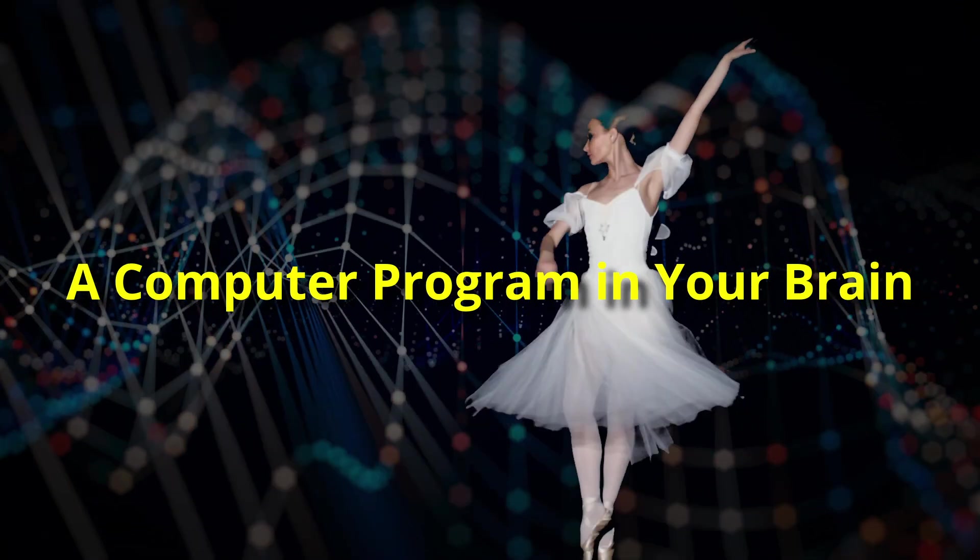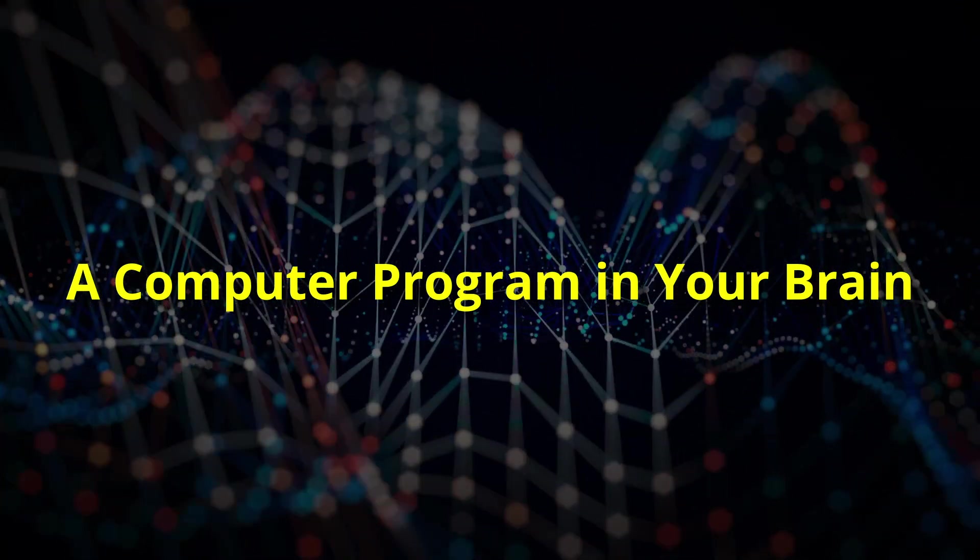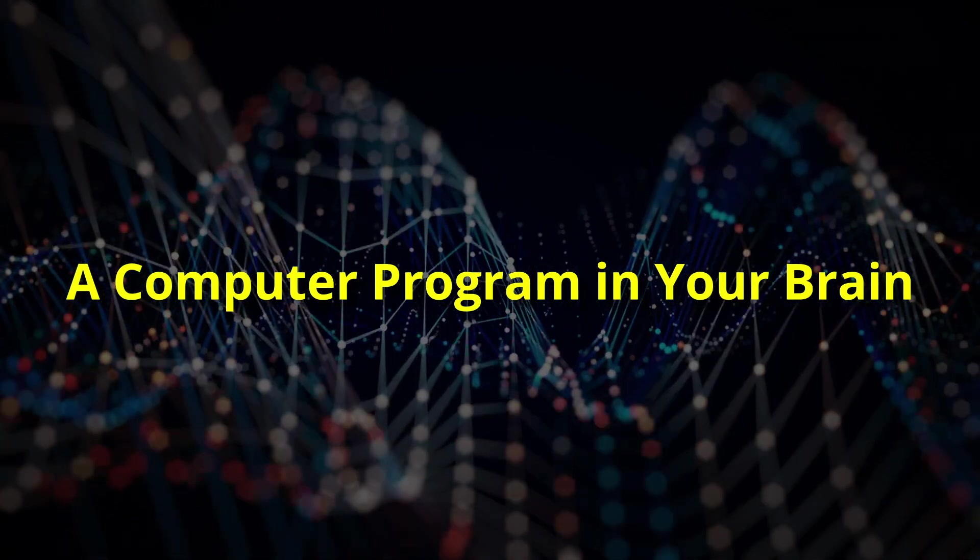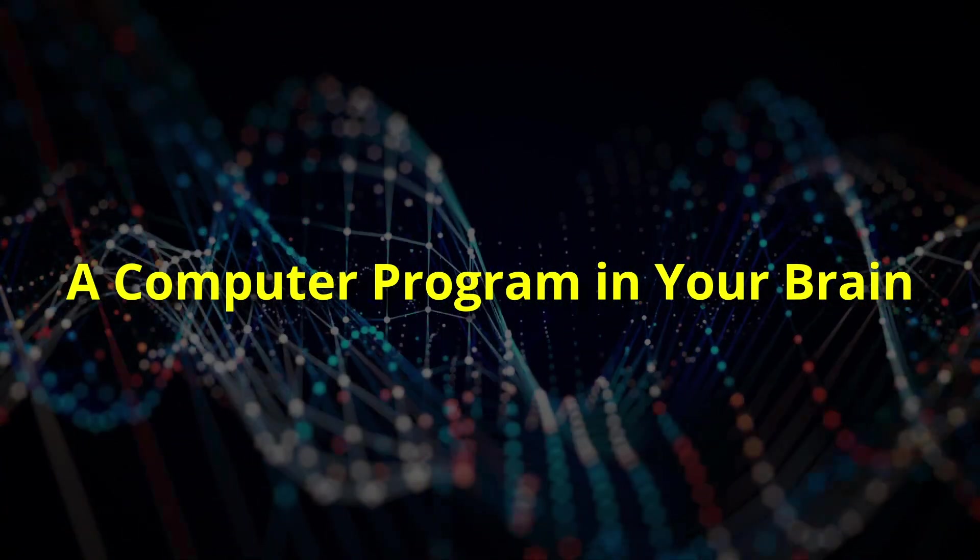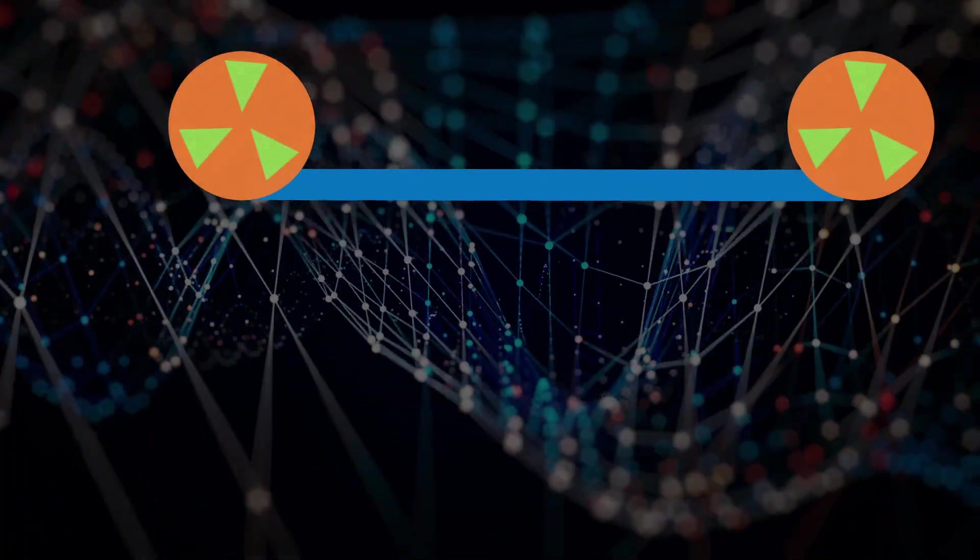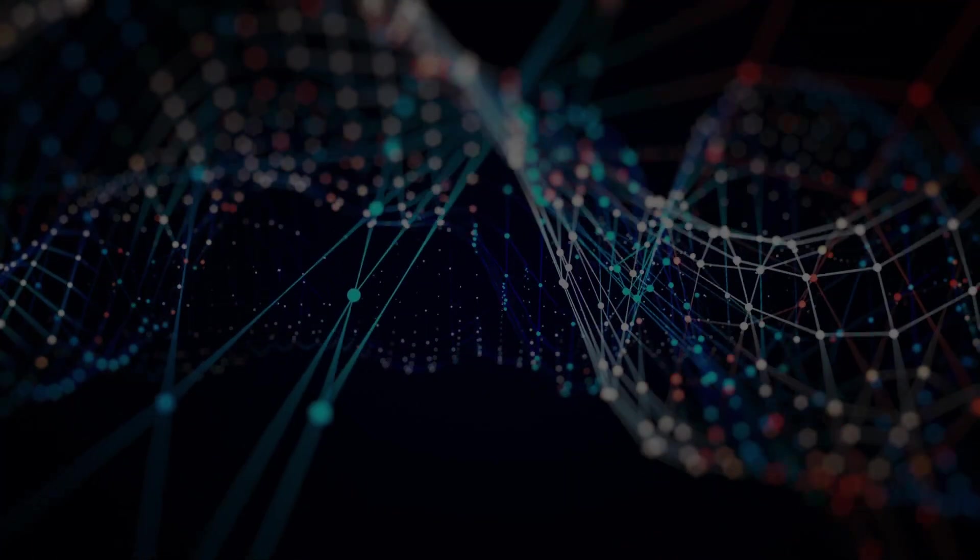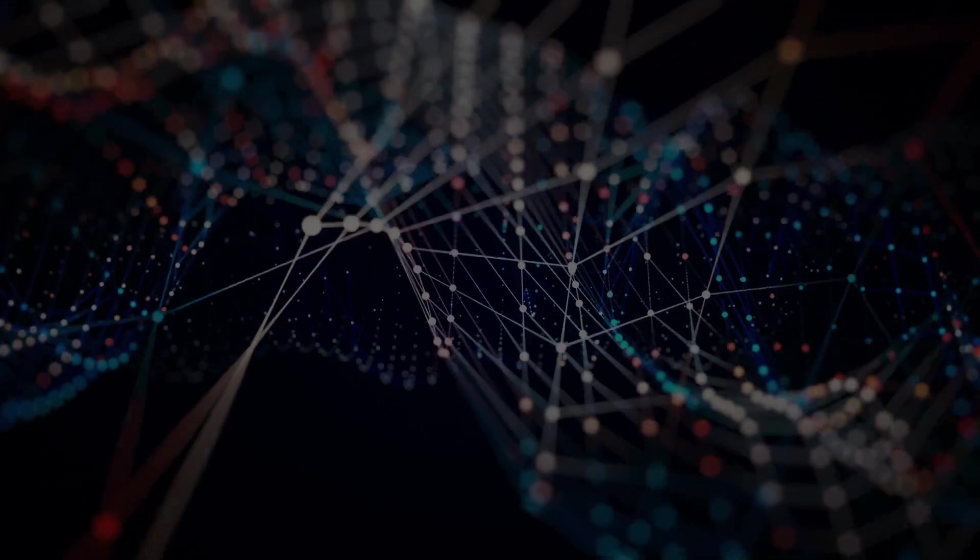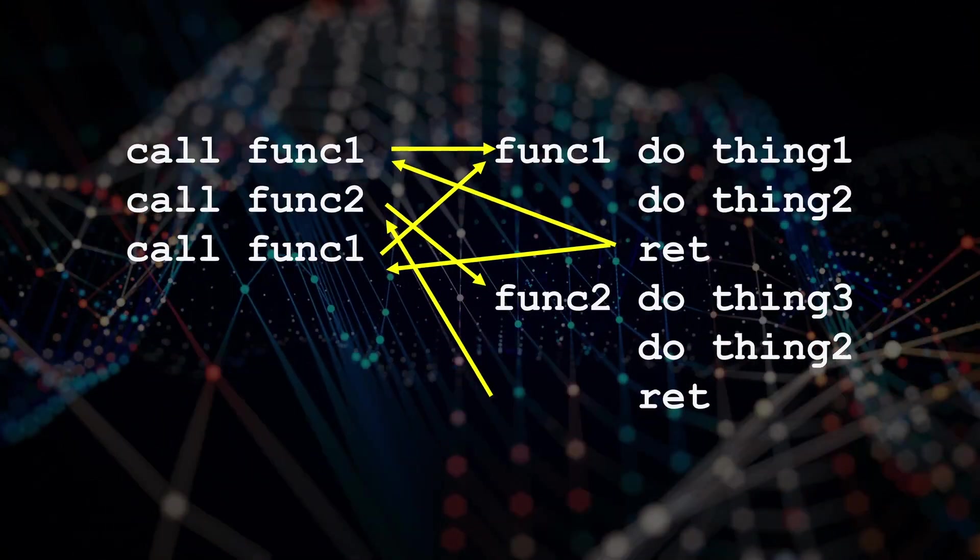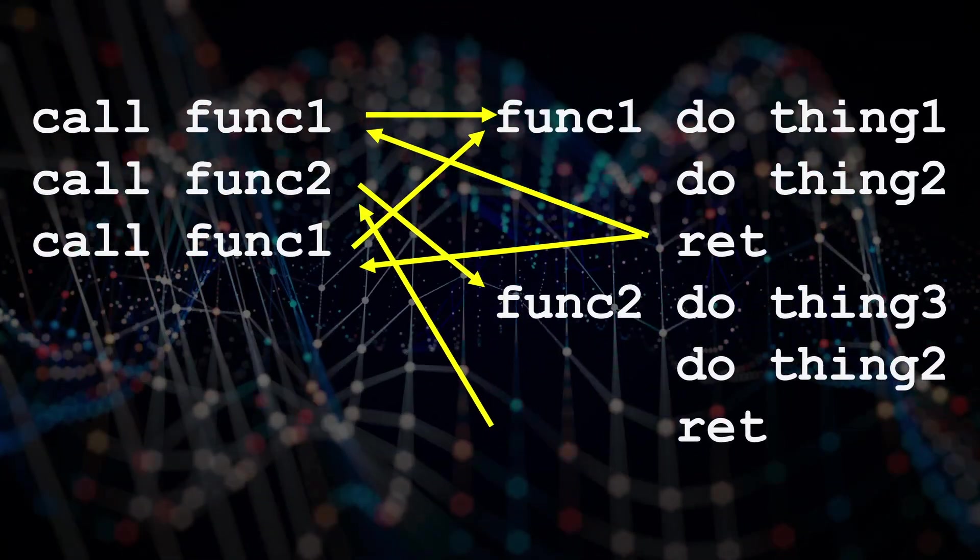But what about flexibility? If your cerebellum only stored complete recordings you'd lack the adaptability needed for everyday life. Instead, your cerebellum makes recordings of tiny fragments that build on each other, so your brain can mix and match things that it has learned to do. That is, they can reference one another just like functions in a computer program can call one another.